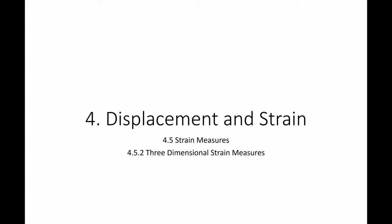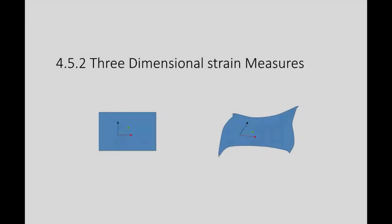In this video, we're going to study the three-dimensional strain measures. I have a reference configuration and a deformed configuration, and I have vectors that change in length, and the angles between them also change. For example, this red vector becomes this red vector, this green vector becomes this green vector, the black becomes this black, and the angles between them change. I'm really interested in the strains in the various directions as the object deforms.